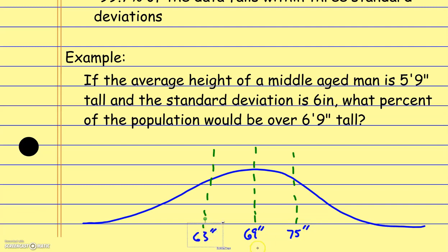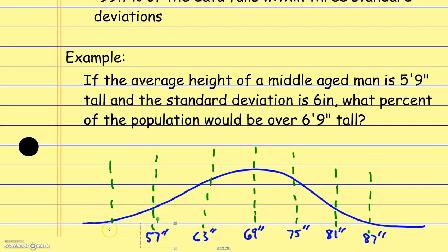If I go another six inches in each direction — marking another standard deviation — here I have 81 inches and here I would have 57 inches. Going one more standard deviation in each direction, another six inches: here that's going to be 87 inches, and here that's going to be 51 inches.